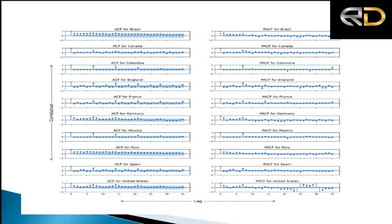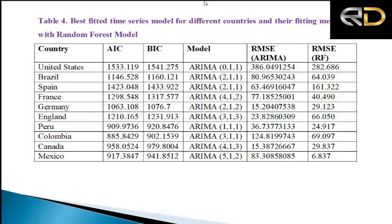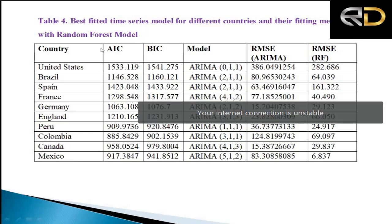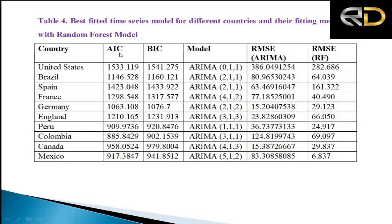These are the best-fitted time series models for the top 10 countries, evaluated using the AIC (Akaike Information Criterion), BIC (Bayesian Information Criterion), and MSE for both ARIMA and Random Forest. These information criteria are functions of the residuals and were used to select the optimal models.